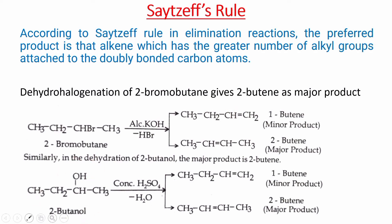For example, in the case of 2-butanol, the OH and one hydrogen are eliminated. Depending on which hydrogen is eliminated, the double bond forms at different positions. According to Saytzeff's rule, the preferred product is the one where the doubly bonded carbon has the greater number of alkyl groups attached — meaning the double bond is in the middle of the chain, making that the major product, while the other isomer is the minor product.